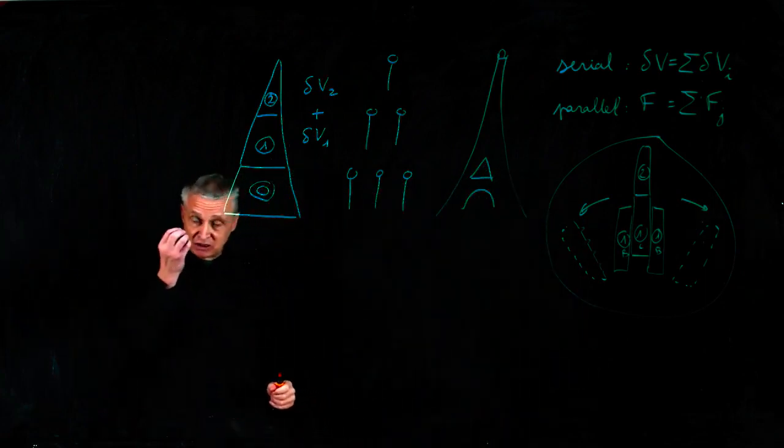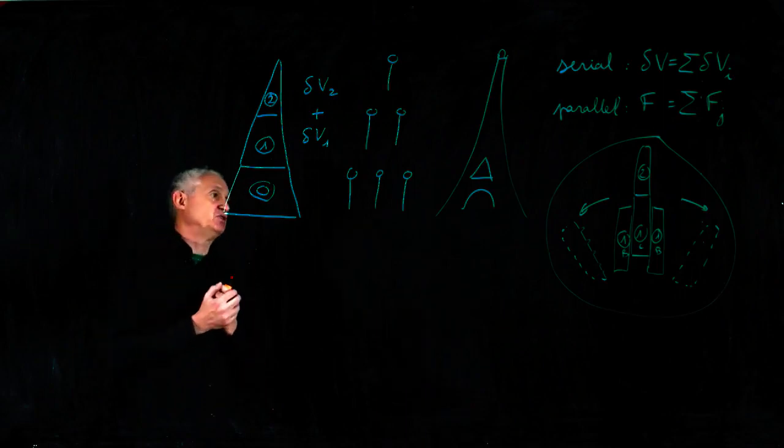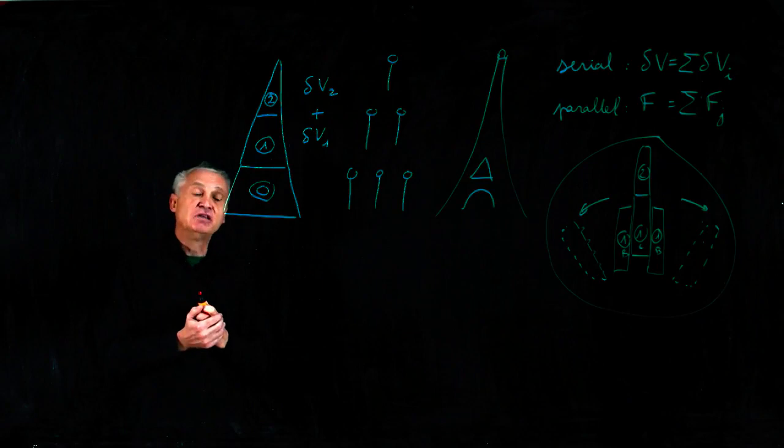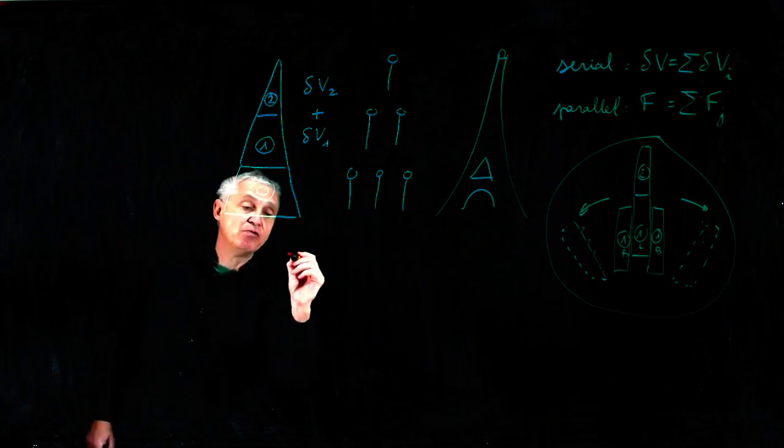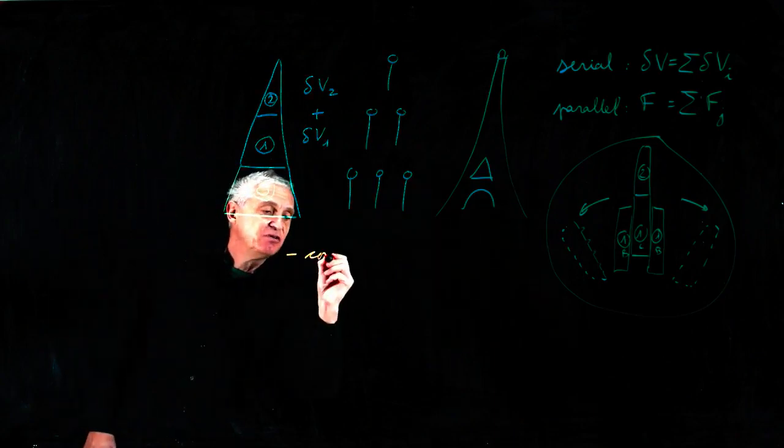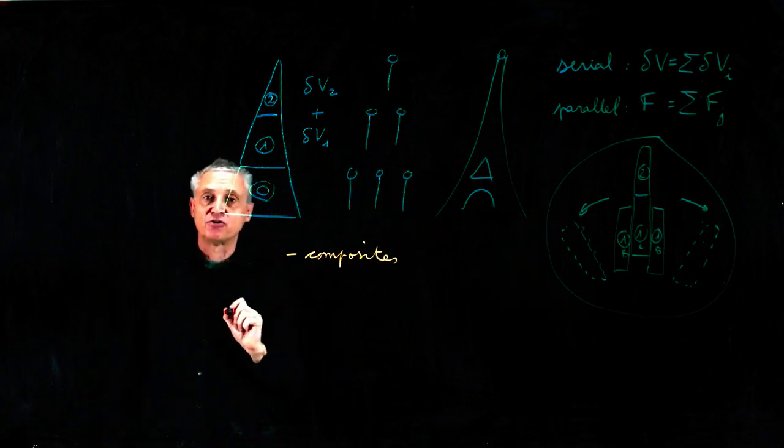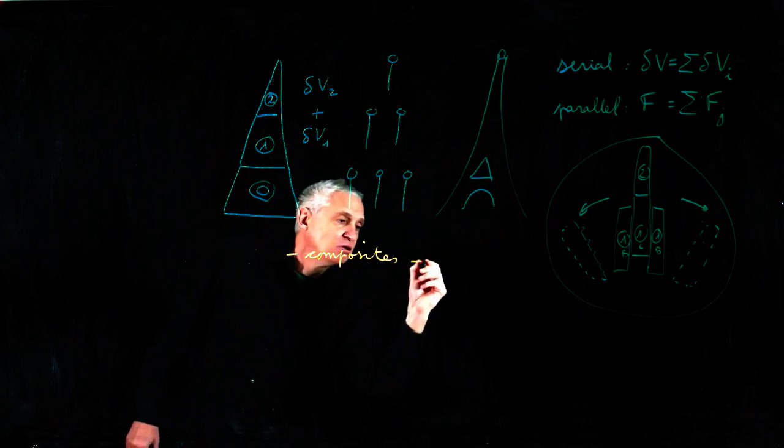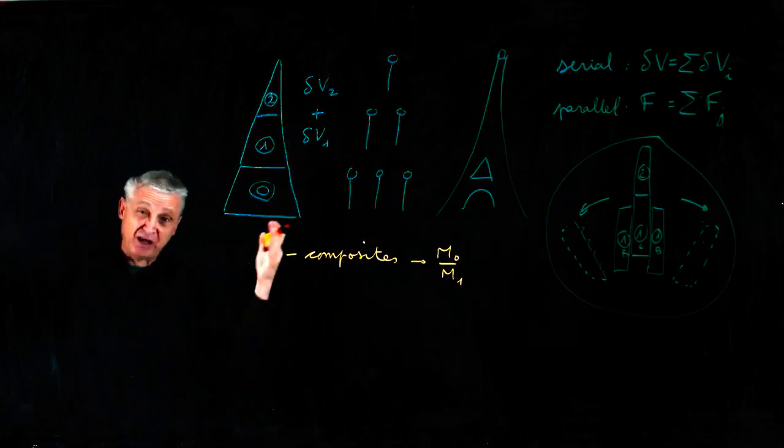But to have the most important benefit from this architecture, we need technological improvement. The first one is to improve the structural ratio. The structural ratio is given by the use of composite. That's the first improvement.